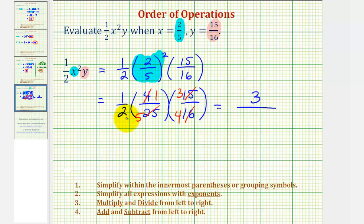And for the denominator, we have two times five times four. Well, two times five is ten, and ten times four equals forty.